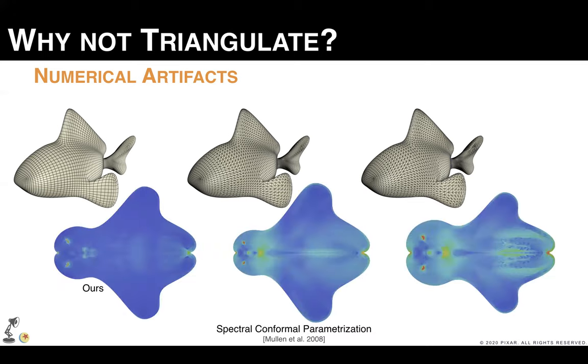Instead, these are the results for a conformal parameterization, where the colors indicate the quasi-conformal distortion. In this case, the issue is that we care about the distortion of the quads, not of the individual triangles, so using a triangulation is effectively over-constraining the computations.